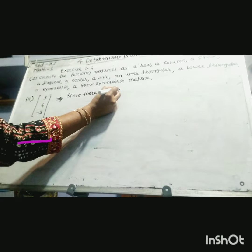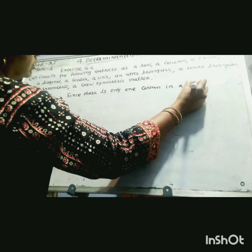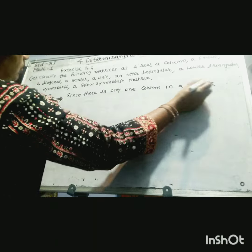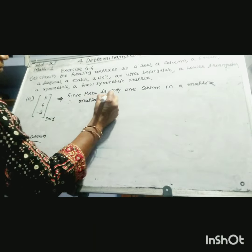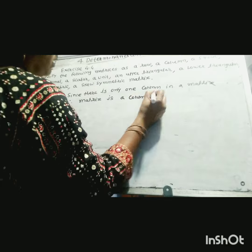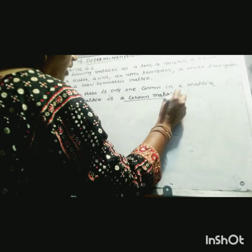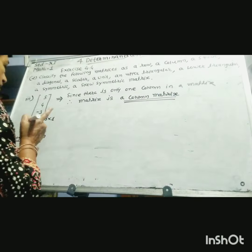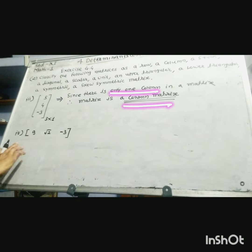Since there is only one column, this matrix is called a column matrix. It is a column matrix because it has only 1 column and there are 3 rows.